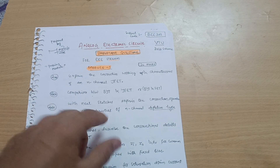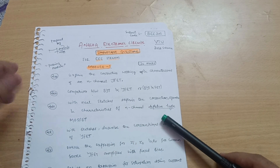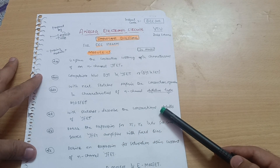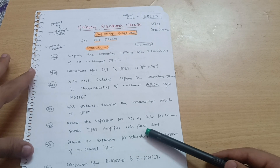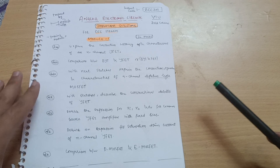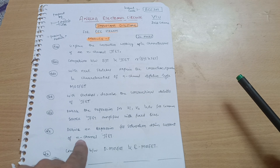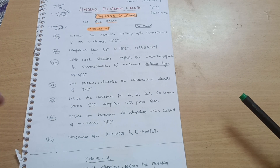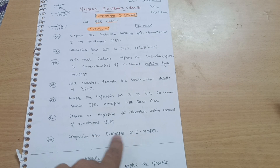Next: with neat sketches, explain the construction, operation, and characteristics of N-channel depletion type MOSFET (D-MOSFET). Next: with sketches, describe the construction details of JFET and derive the expression for Zi, Z0, and Av for a common source JFET amplifier with fixed bias. Next: derive an expression for saturation drain current of N-channel JFET. And definitely an important question — comparison between D-MOSFET and E-MOSFET (depletion type and enhancement type MOSFET).